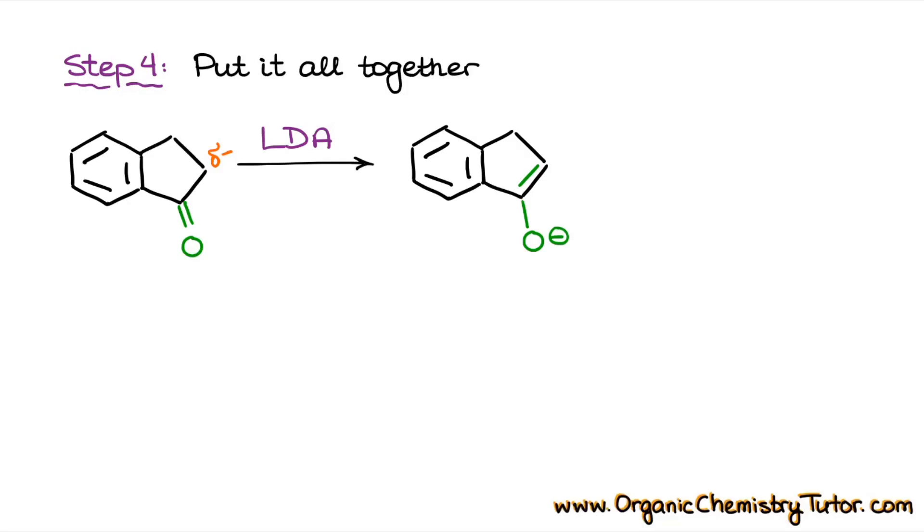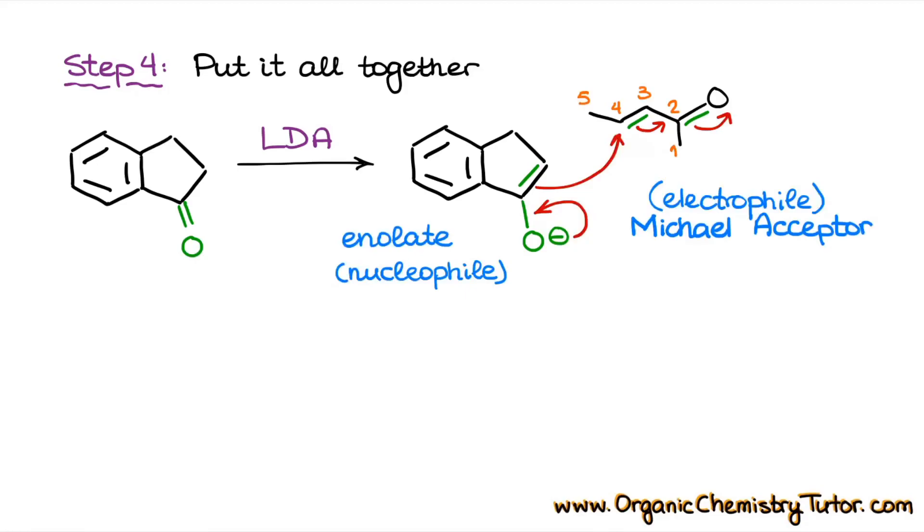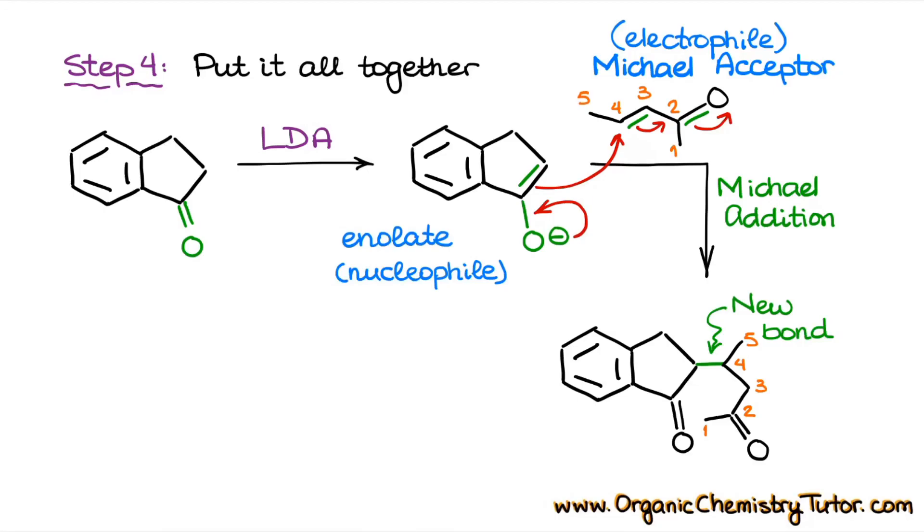Once we have this enolate, we can add our other reagent and go through the Michael addition. Once we have our Michael addition going and once we have our product, then we are ready to go into the Robinson annulation. If you follow the arrows in this Michael addition process that I have here on the screen, then the product is going to have a new bond between the alpha position of what used to be our enolate and a carbon number four in the alpha beta unsaturated compounds. Sometimes the Michael addition we call it as the conjugate 1,4 addition. For the simplicity sake, for the purposes of this video, I'm not going to go over the mechanism of this reaction and exactly how that happens. I'll talk about that some other time.